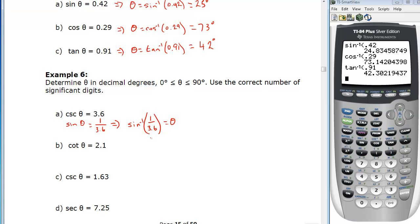That tells us then that theta is going to be, let's check, sine inverse of 1 over 3.6. That gives us 16 degrees rounded to two digits, since 3.6 was two significant digits.